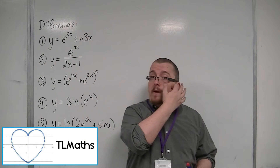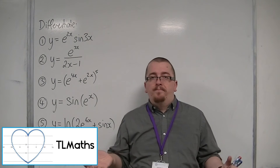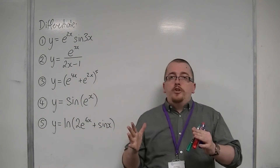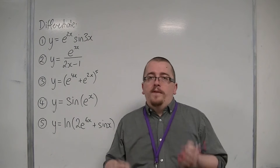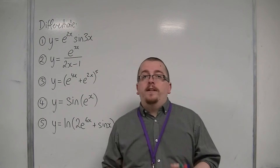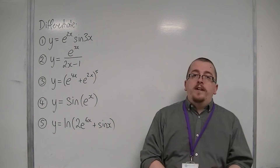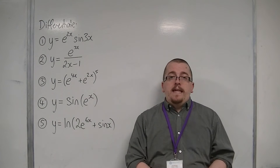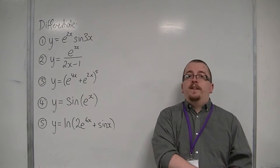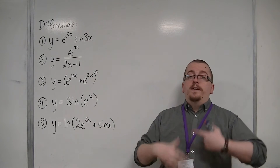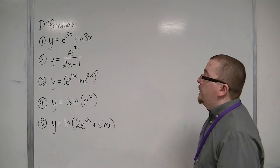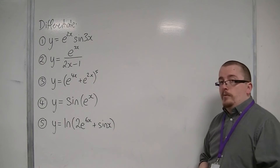So we're now ready to throw everything together. We have three rules of differentiation: the chain rule, the product rule, and the quotient rule. We now know how to differentiate sine, cosine, e, tan, and ln of x. So now we're going to throw it all together and go through these five examples here.